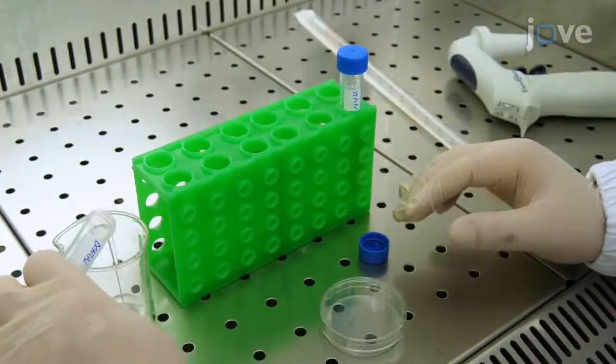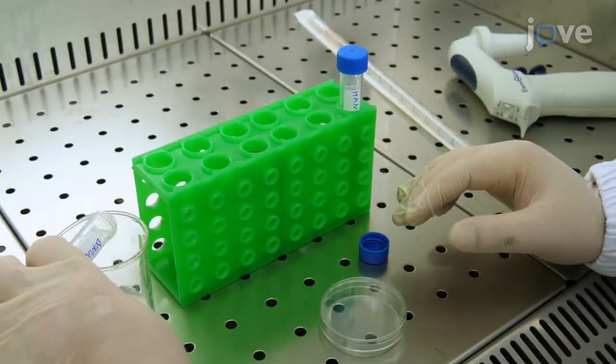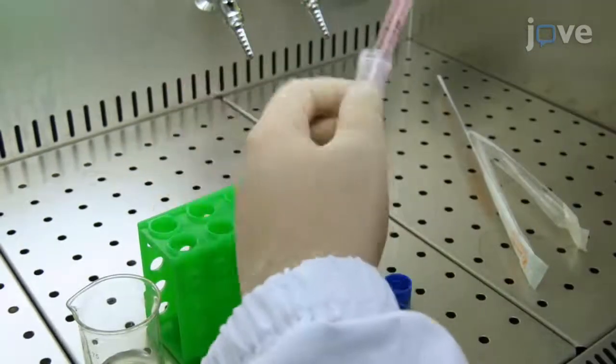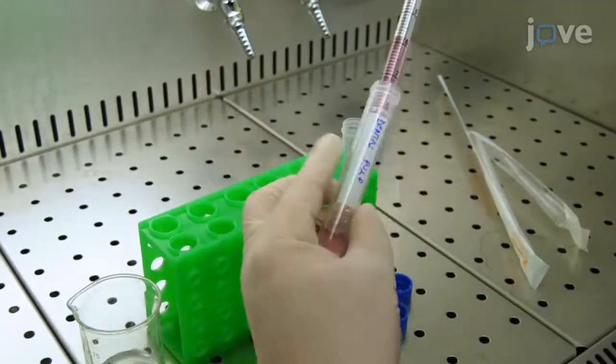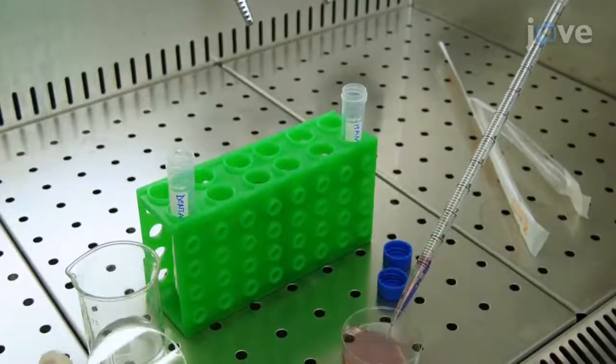After the centrifugation, remove the supernatant. Re-suspend the pellet in Hanks solution and transfer the sample to a petri dish.